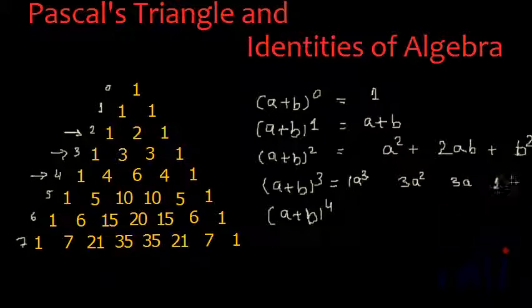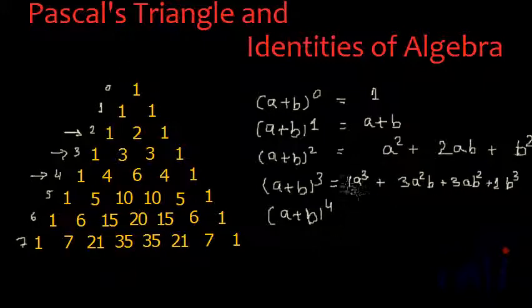Next we write the powers of B. The maximum power of B is in the last term, so we have B³, then B², then B. If we combine everything and remove the 1 coefficients, we get the formula for (A+B)³: A³ + 3A²B + 3AB² + B³.